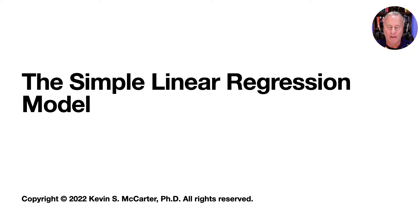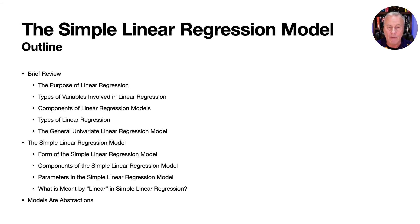Welcome back. In this lecture, we begin coverage of the first type of linear regression model we'll be looking at in this course, specifically the simple linear regression model. Here's an outline of what we'll be looking at. We'll start off with a brief review of the purpose of linear regression, then talk about the types of variables involved and the components of linear regression models, and also the types of linear regression.